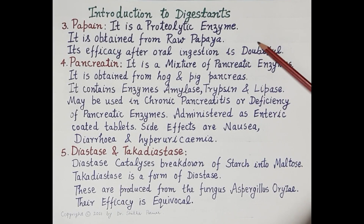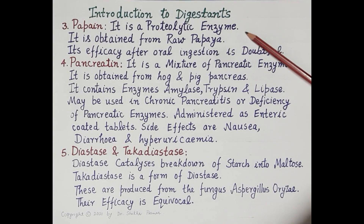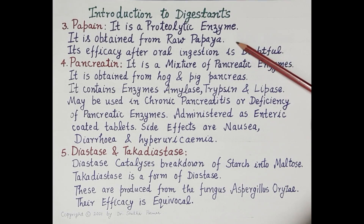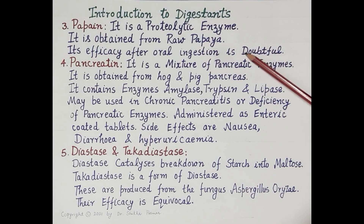The next digestant is papain. Papain is also a proteolytic enzyme that digests proteins. It is obtained from raw papaya; however, its efficacy after oral ingestion is doubtful.